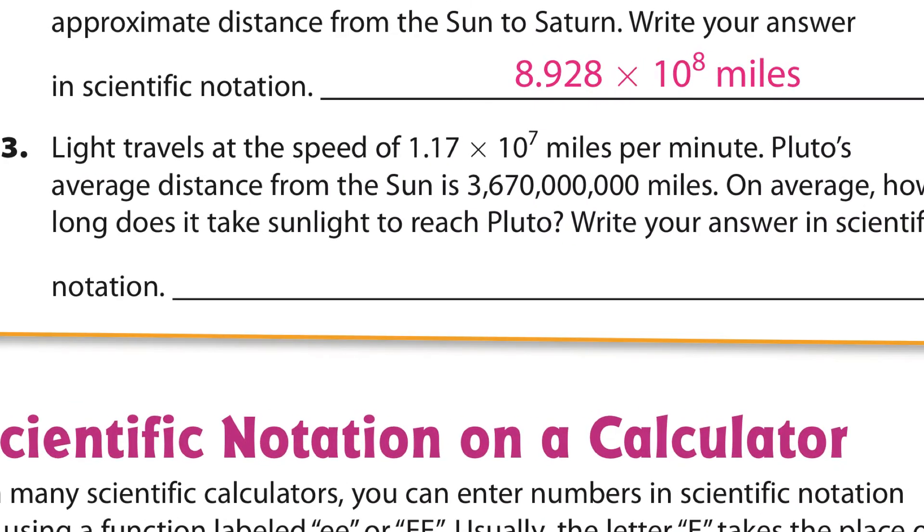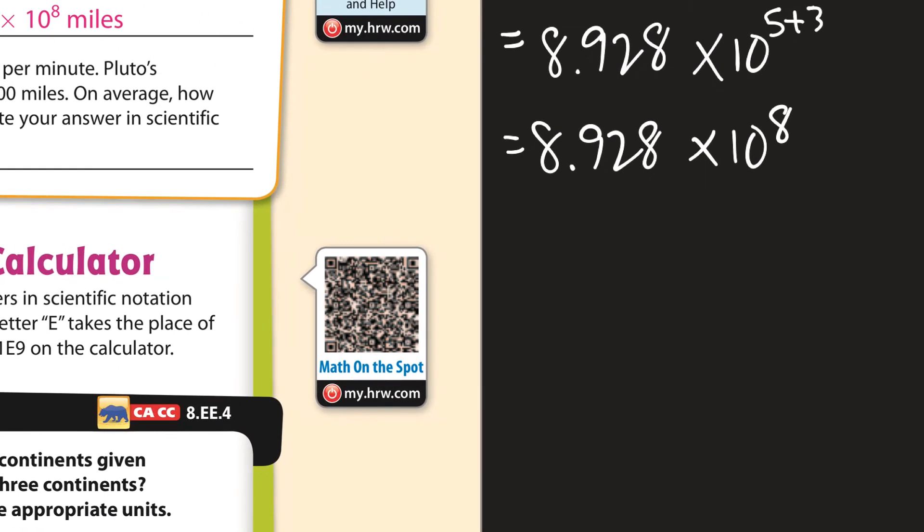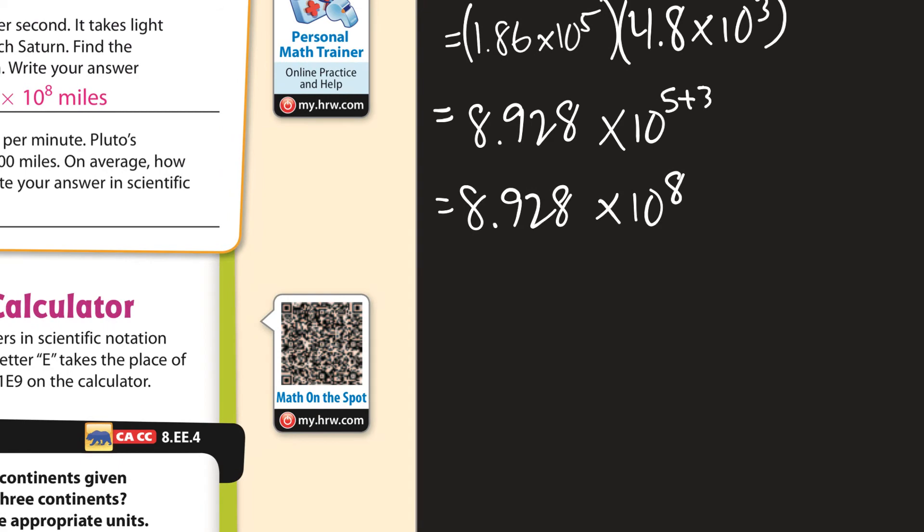Next. Light travels at a speed of that many miles per minute. Pluto's average distance. On average, how long does it take sunlight to reach Pluto? Okay. So that's a time. So how long does it take? That's time. And so we would use our distance equals rate times time again.